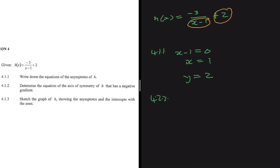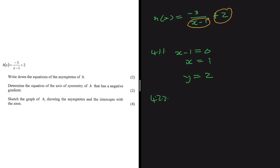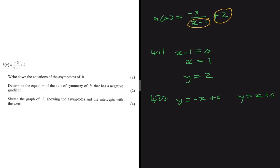Now let's do 4.2.2, which asks us to determine the equation of the axis of symmetry of h that has a negative gradient. A hyperbola can only have two axes of symmetry: one being y = -x + c and another being y = x + c. This question specifically asks for the one with a negative gradient, so we use the first equation.